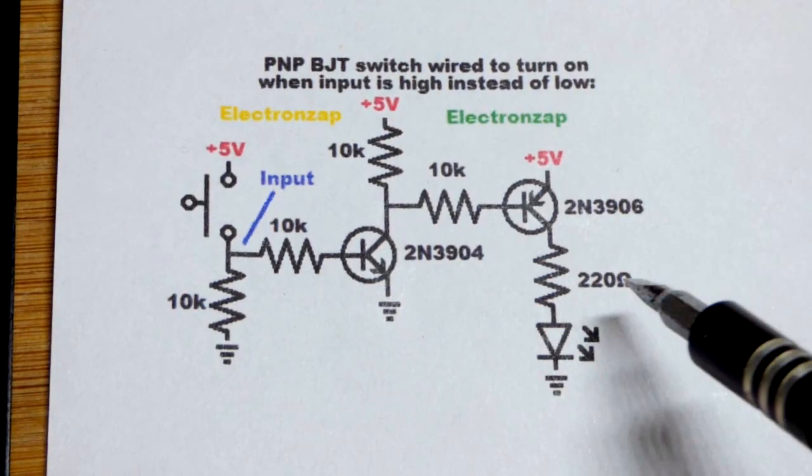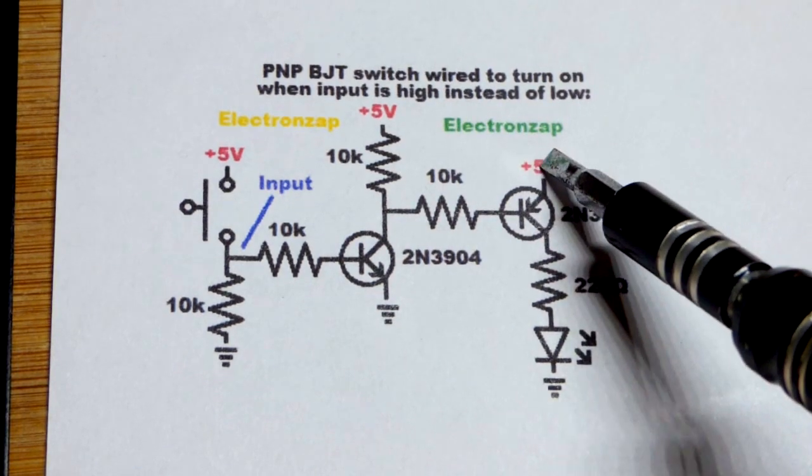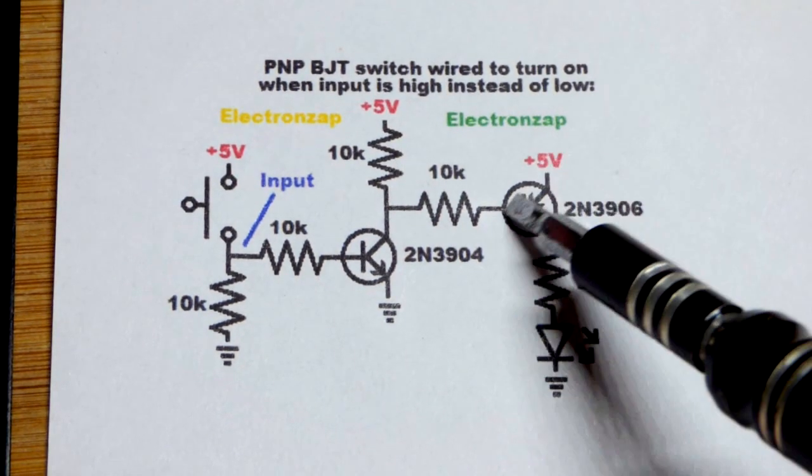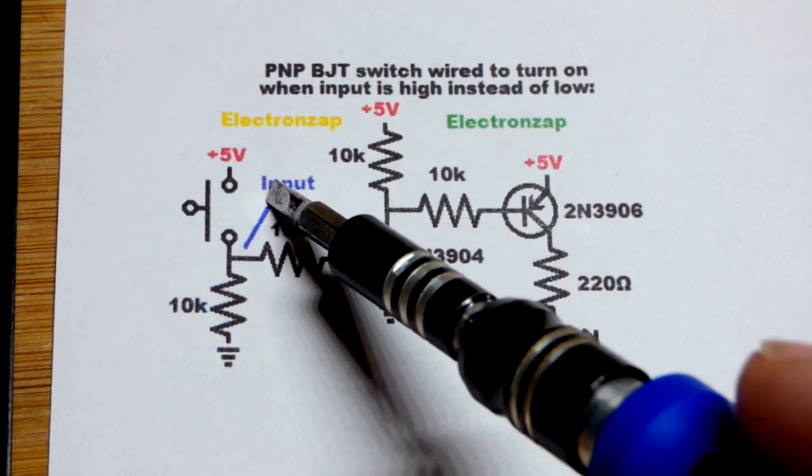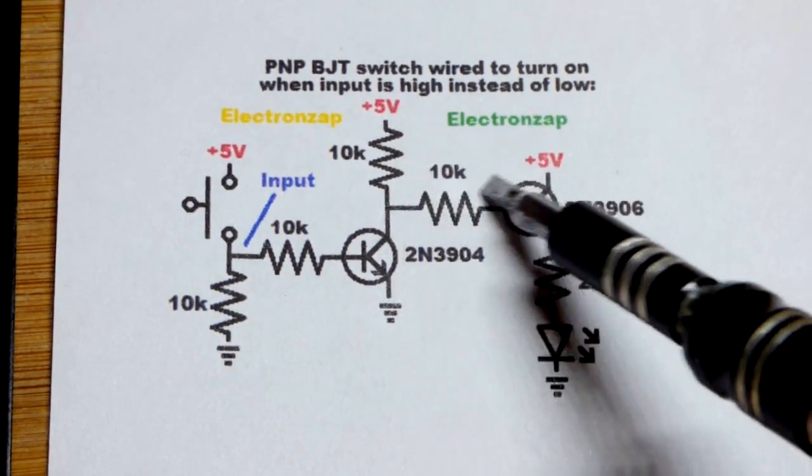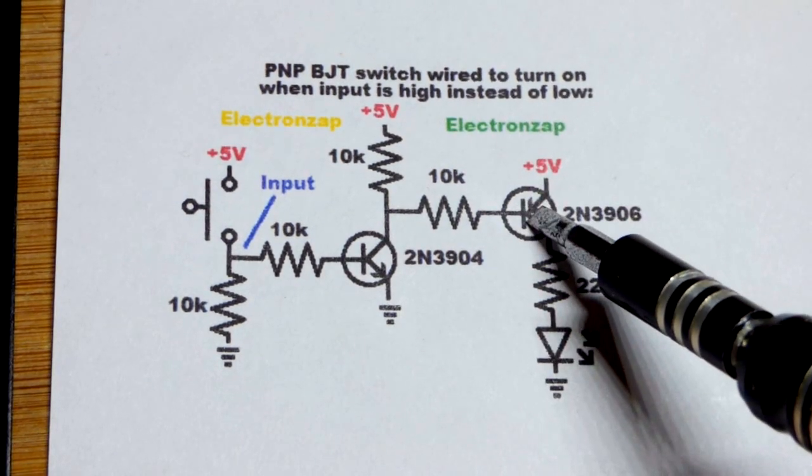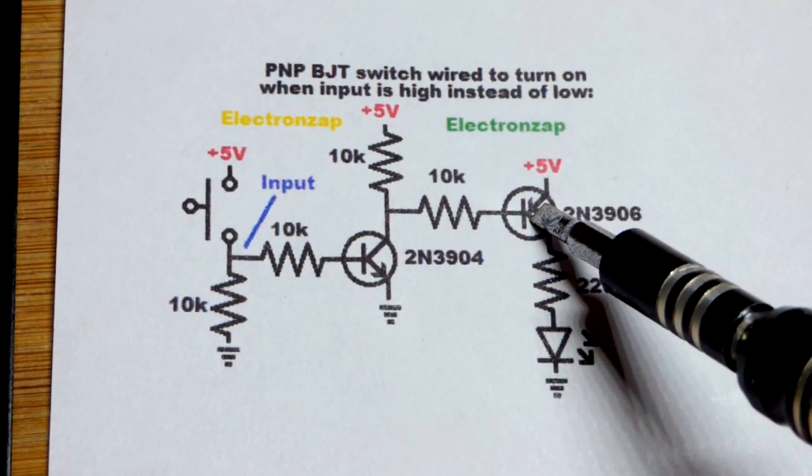So now in this video we're going to modify a PNP bipolar junction transistor switch. We got the emitter here and the way it's wired up, usually this transistor is off and we have a high input there, 5 volts. And so the PNP bipolar junction transistor stays off.